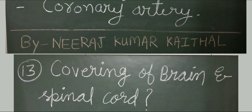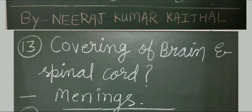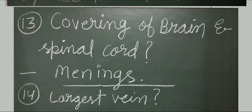Covering of brain and spinal cord: meninges. There are three meninges covering the brain and spinal cord. The outermost covering is known as the dura mater. The middle meninges is known as the arachnoid mater. The inner meninges is known as the pia mater.